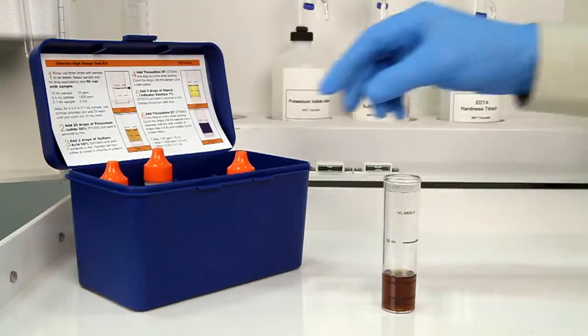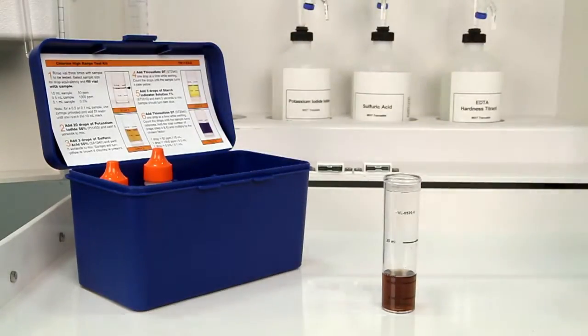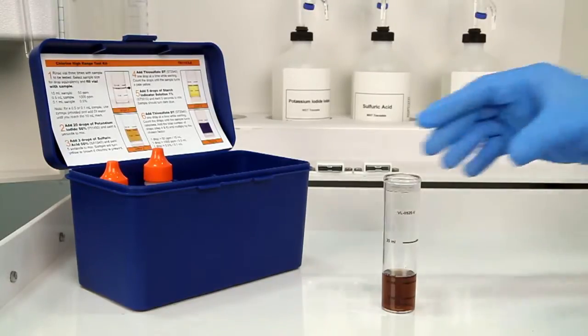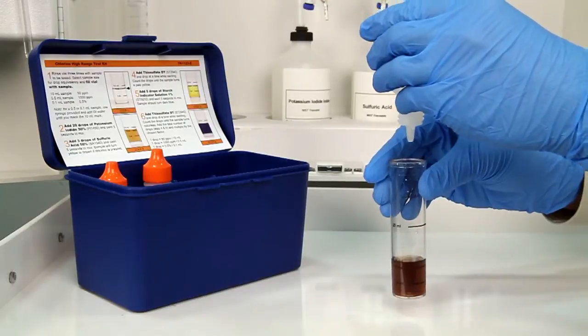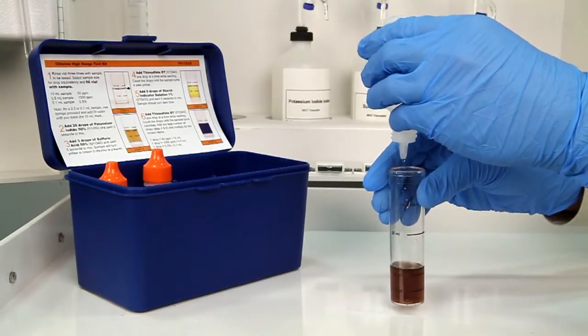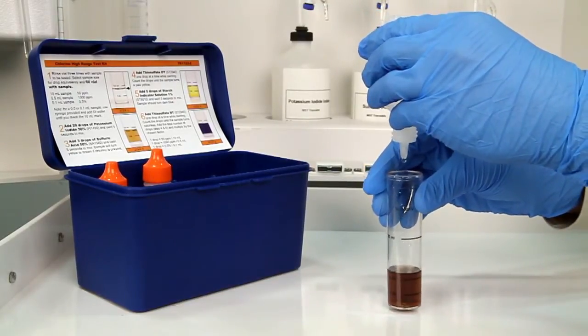The next step is to perform the second titration using thiosulfate DT. It's important to make sure you have the proper titrant and the proper sample size for this titration. Remember to hold the bottle vertically to get a consistent drop size.